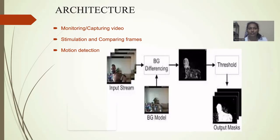If a fixed pixel value is greater than the present pixel value, the picture is shown in white. That white region is known as motion in the picture, and we can conclude it as a detection of motion. The rest is continued by a teammate.